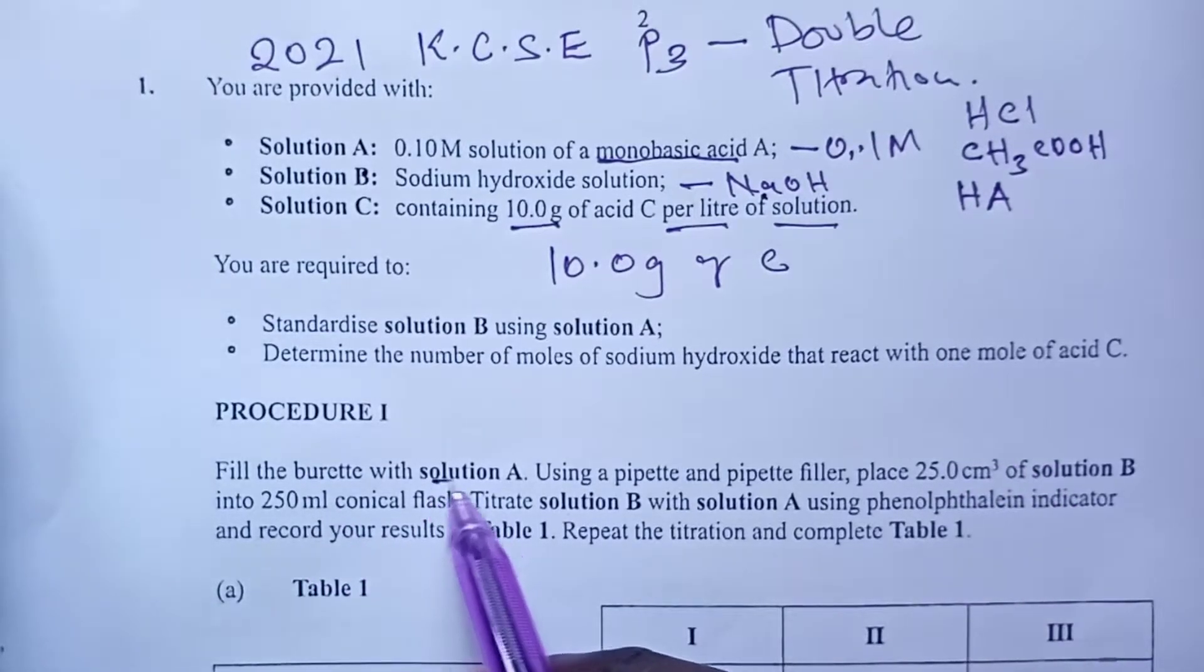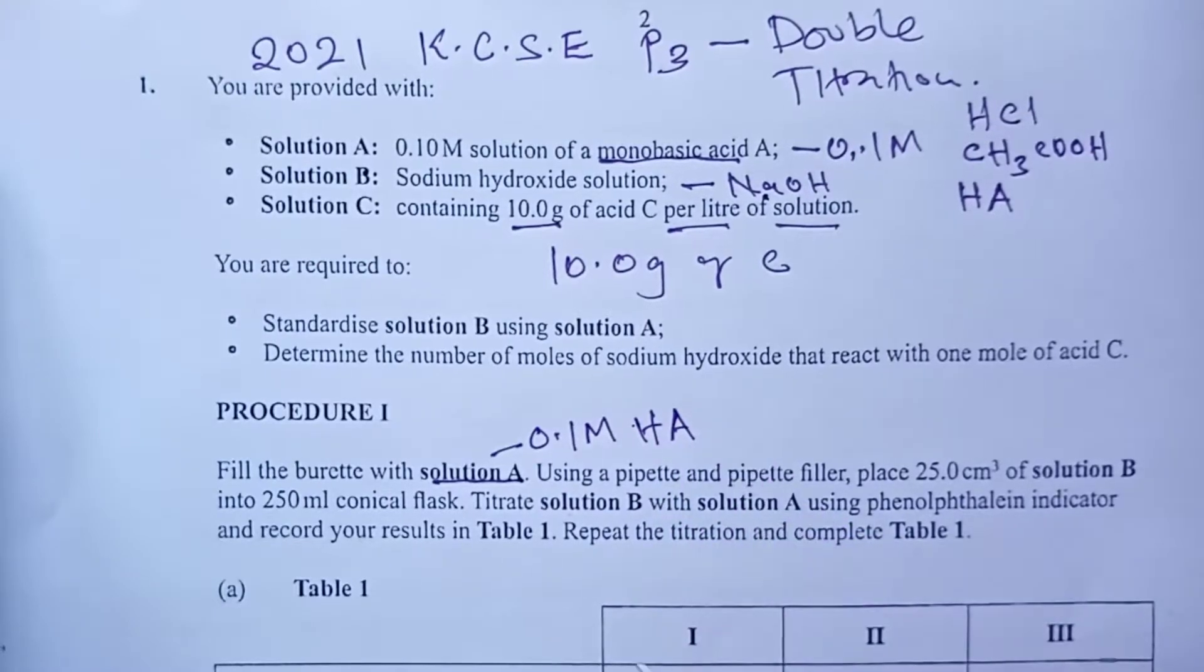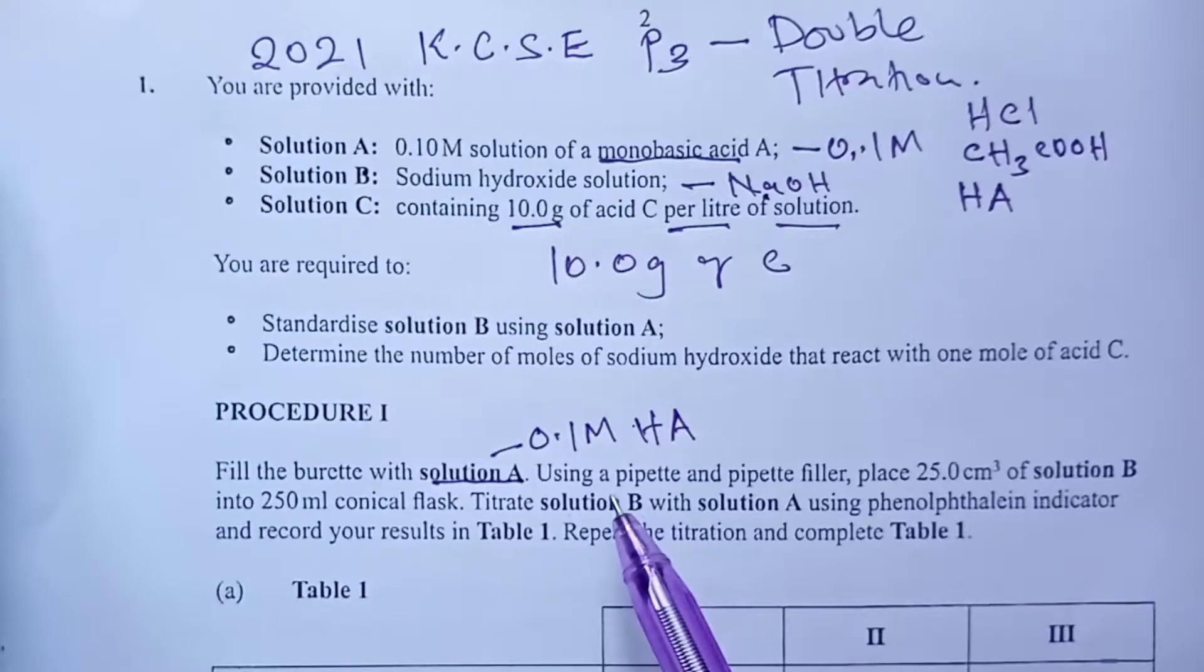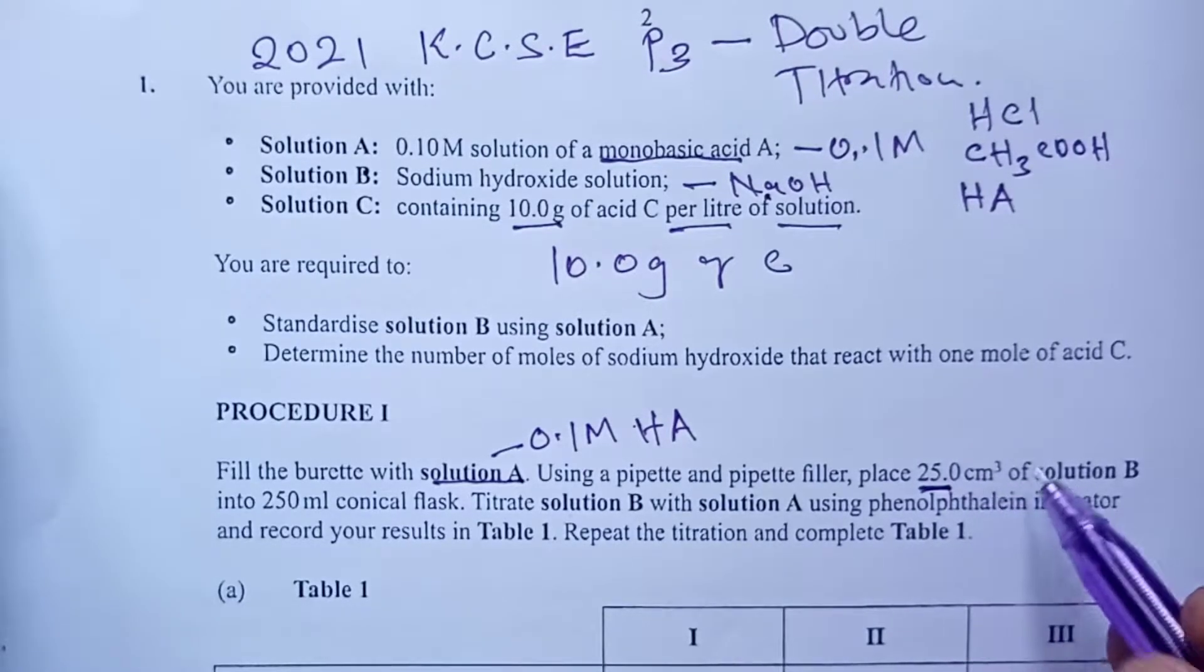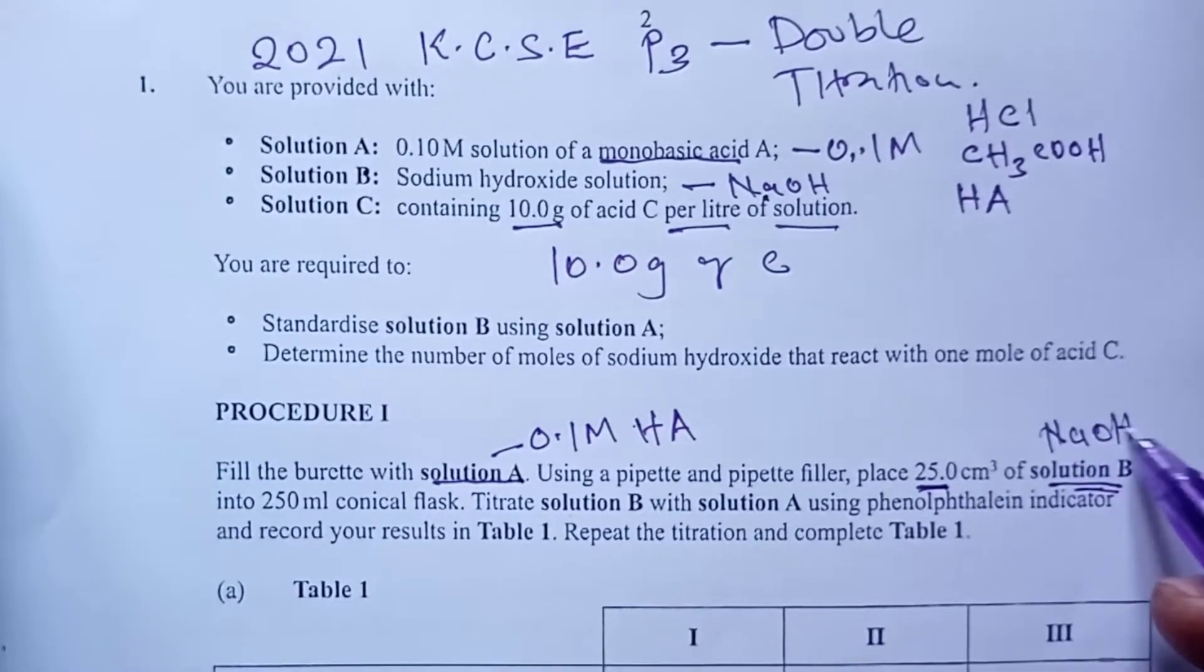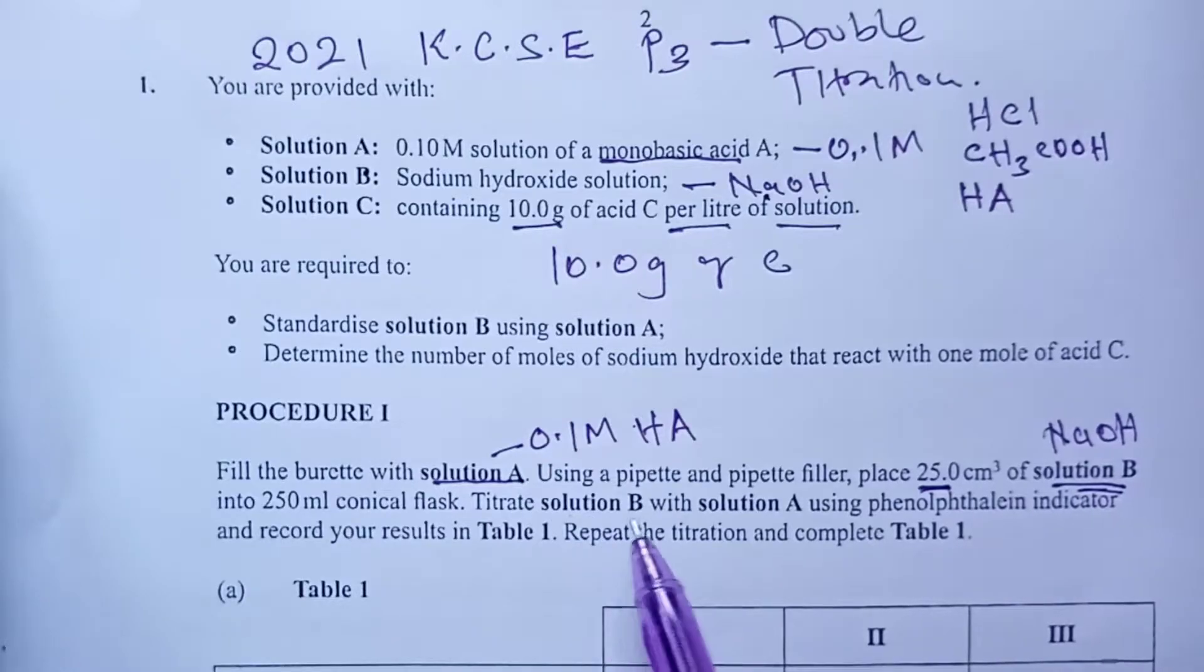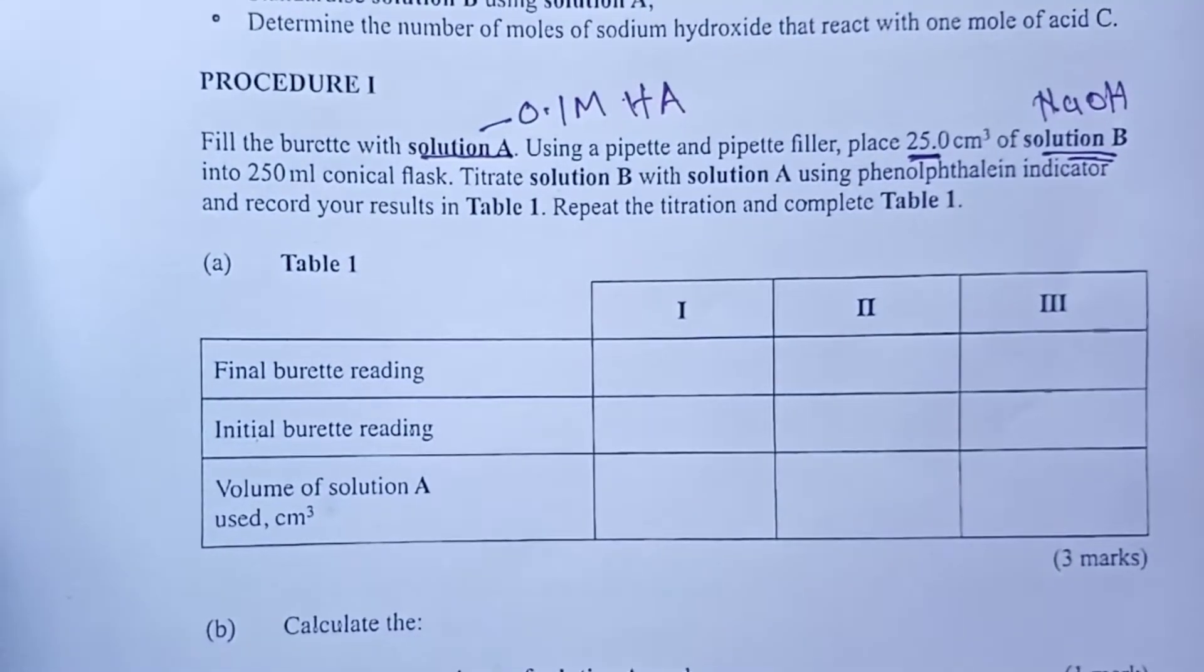Fill a burette with A, our A remains 0.1 molar, let's call it HA for now, a monobasic acid. Then we were asked that using a pipette and a filler, place 25, we mark these volumes because they are very useful in calculations, of solution B, B is sodium hydroxide, into a 250 conical flask. We were then asked to titrate B with A using phenolphthalein indicator and record results in table one. We were to repeat the titration two more times so as to complete that table.